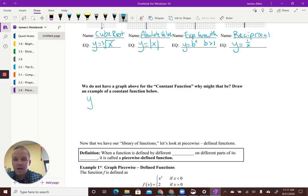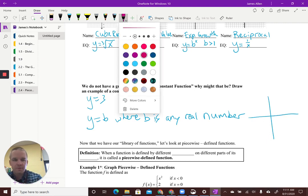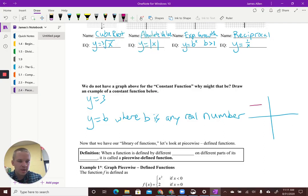A constant function is just like a y equals, say, 3 or 2 or any real number. So really, it's y equals b where b is any real number. And an example of a graph would be something like this. Just when I said y equals 3, 1, 2, 3. Boom. That would be 3. All right. So it's a horizontal line. That is our constant function, right? Y equals some number, any real number. Cool.